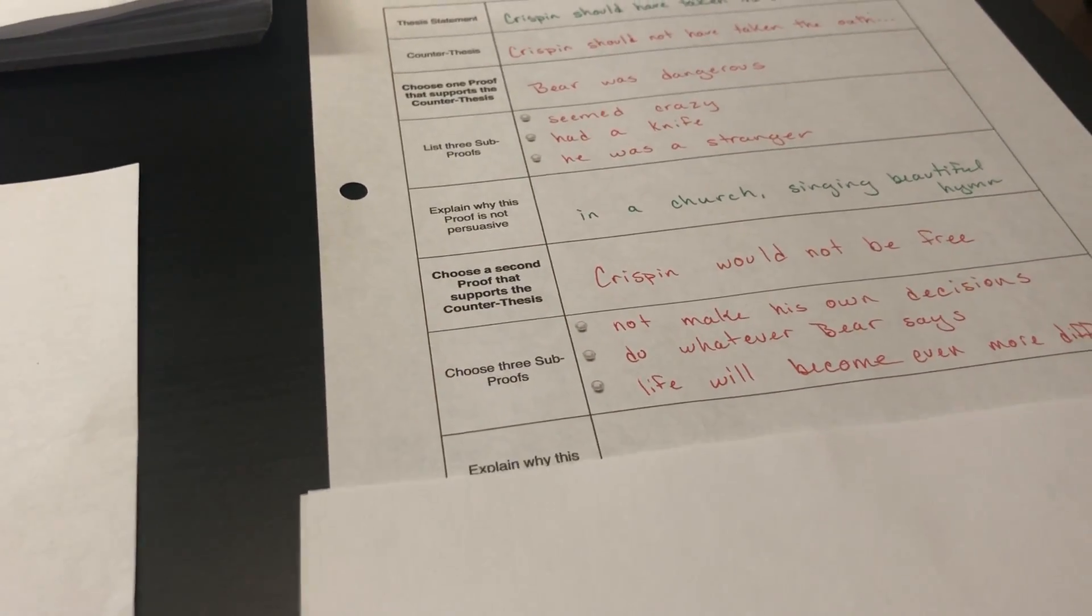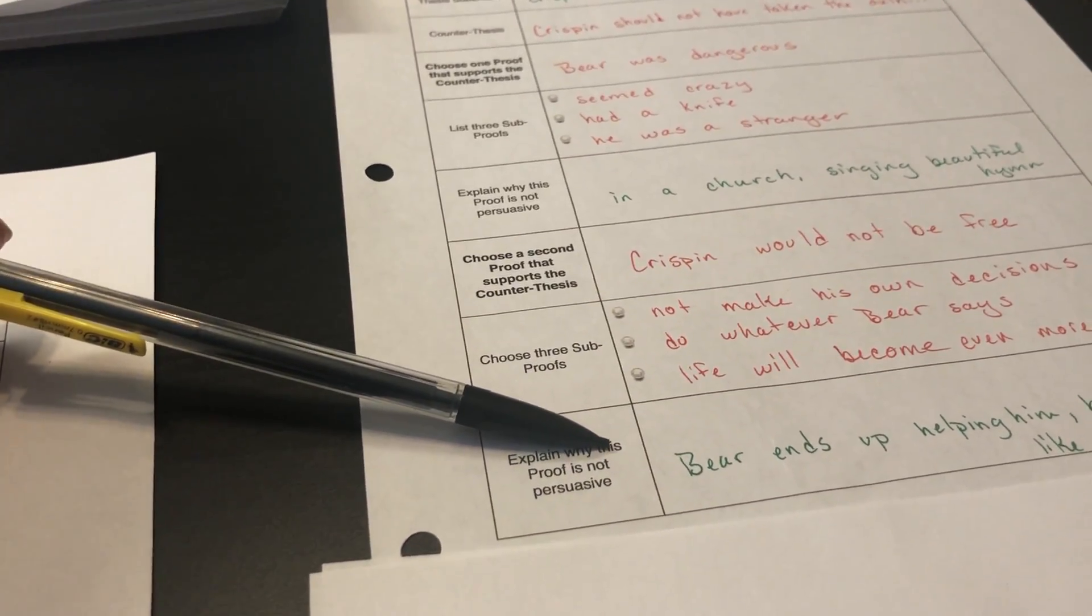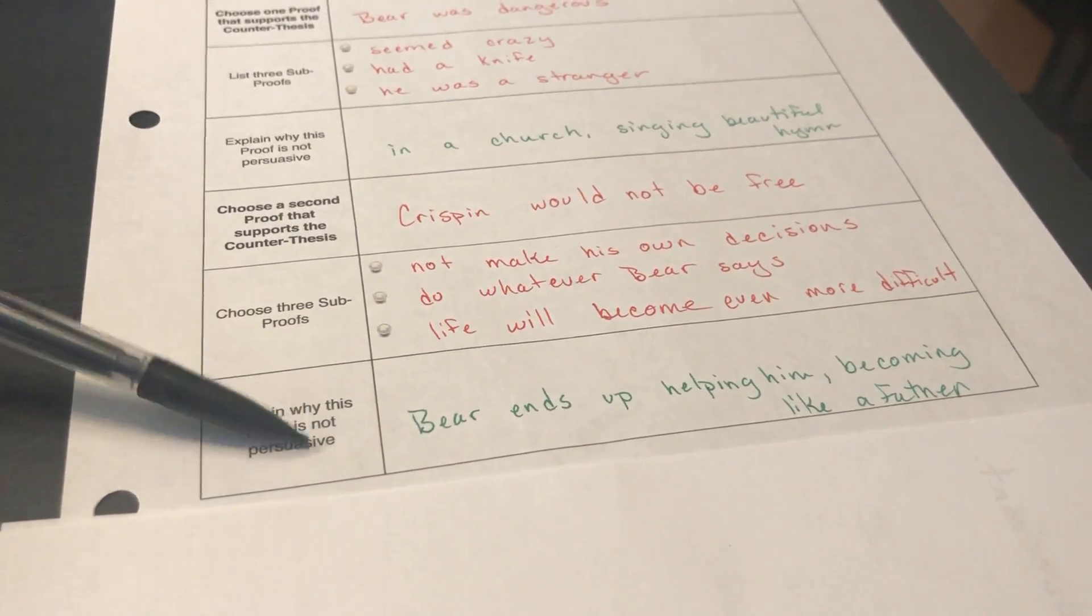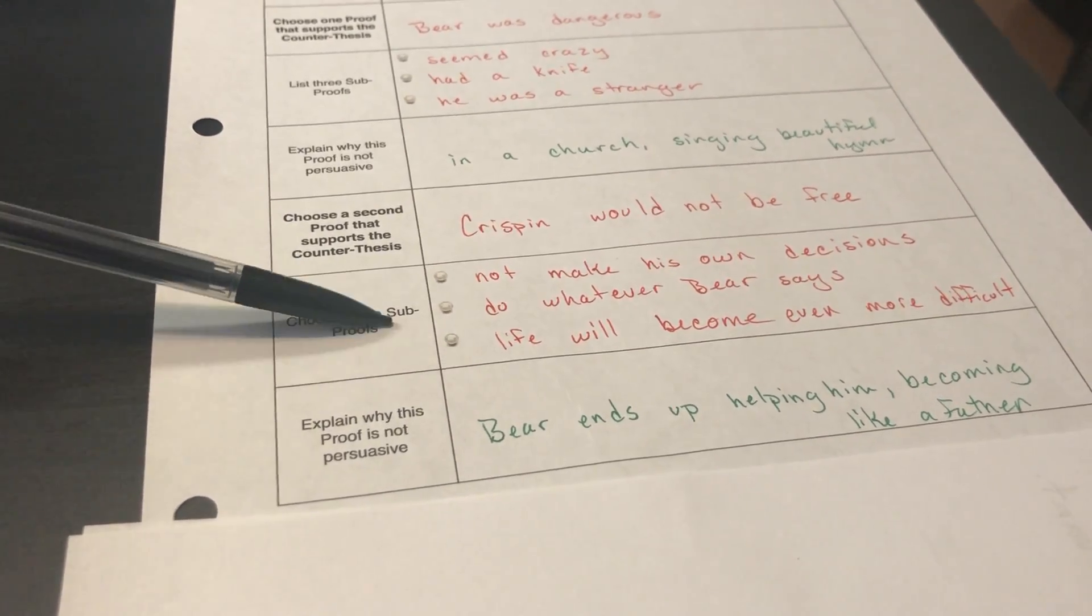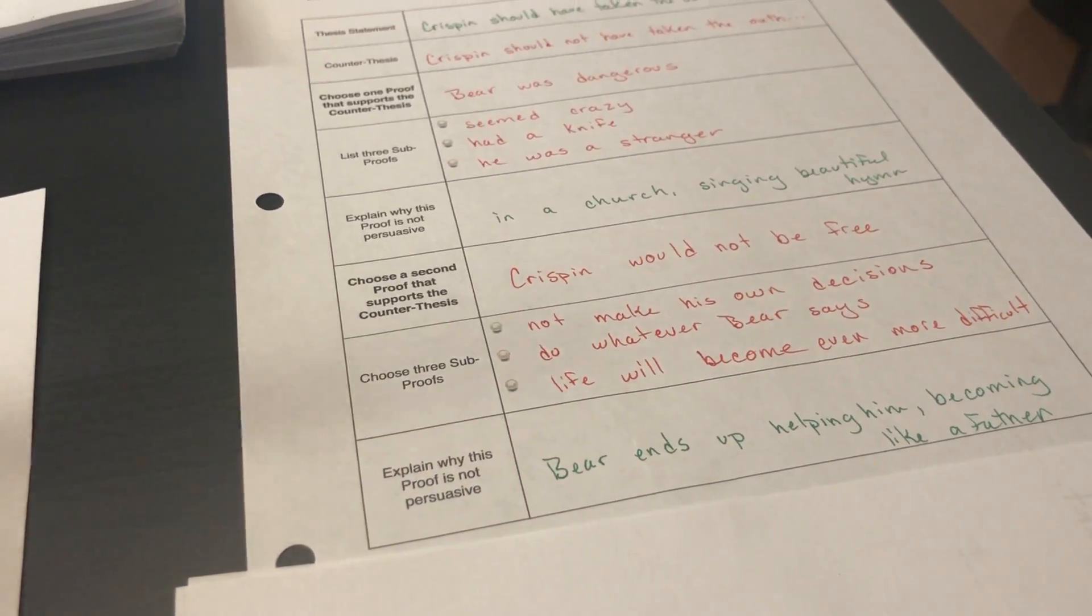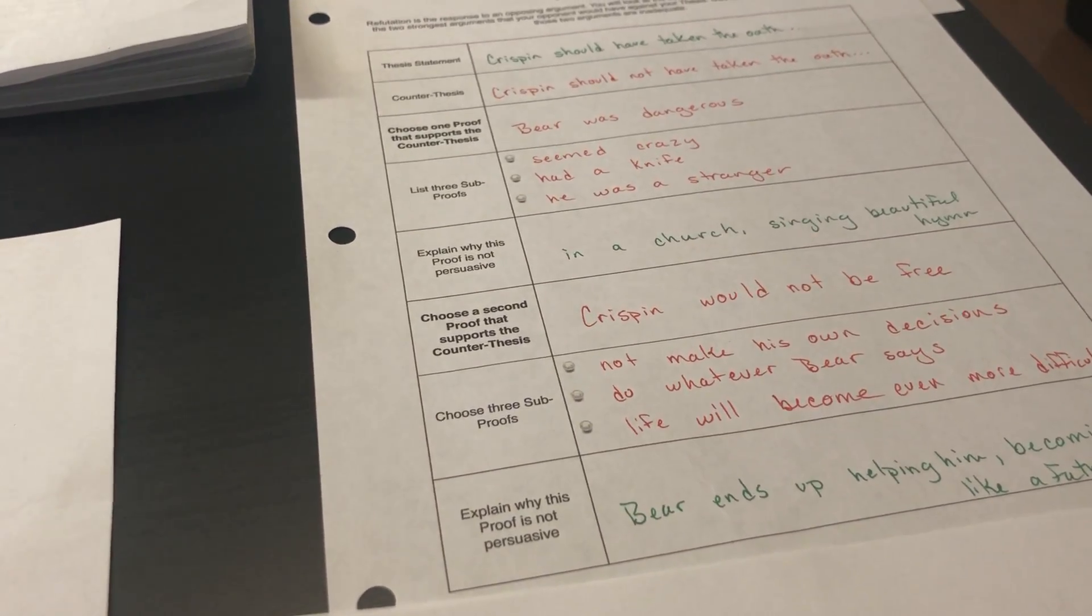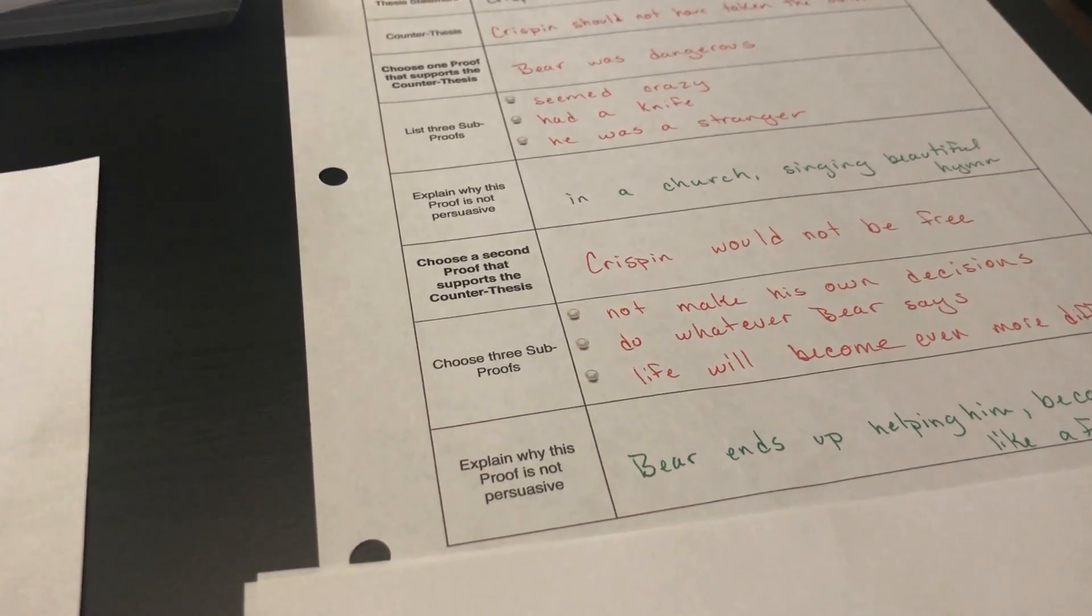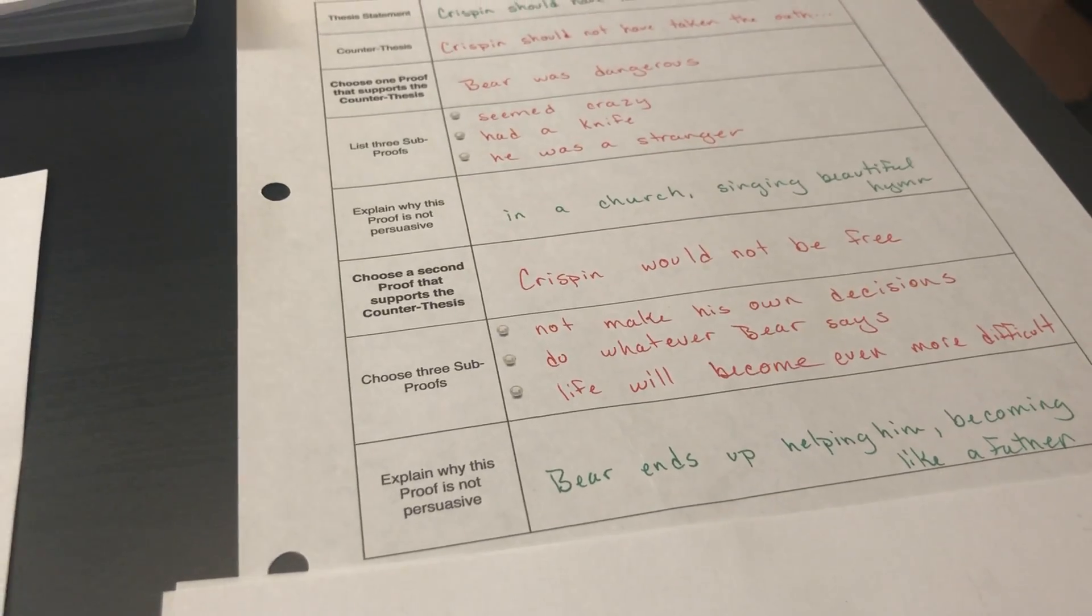Then we have to counter that. This is what they came up with, that Bear ends up helping him. Eventually, Bear becomes like a father to him. So this is our counter to somebody who says that Crispin would not be free. In the act of him giving up his independence, he actually ends up saving himself, which is very profound. It's the story of our Christian life and how we give up to Christ and how ultimately he saves us. That was really cool how that worked out.